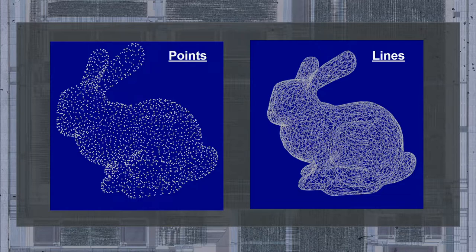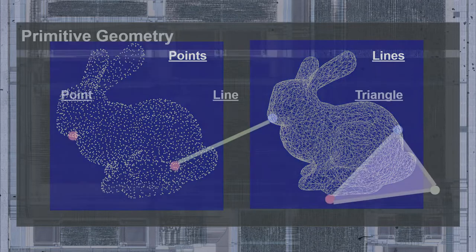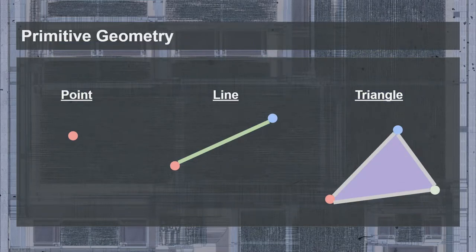So then how could early 3D accelerators draw these types of shapes? Most GPUs, or at least the graphics drivers, are capable of drawing three main primitive shapes: a point, a line, and a triangle.